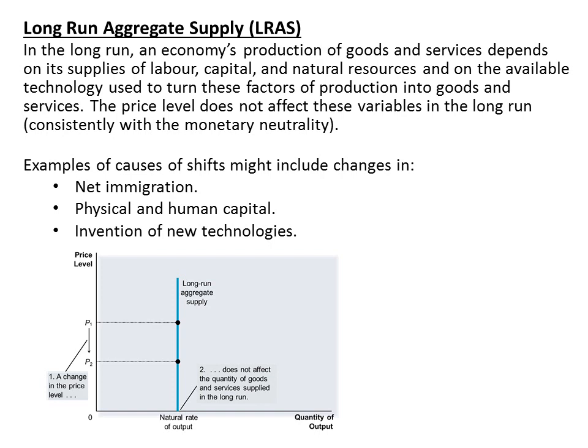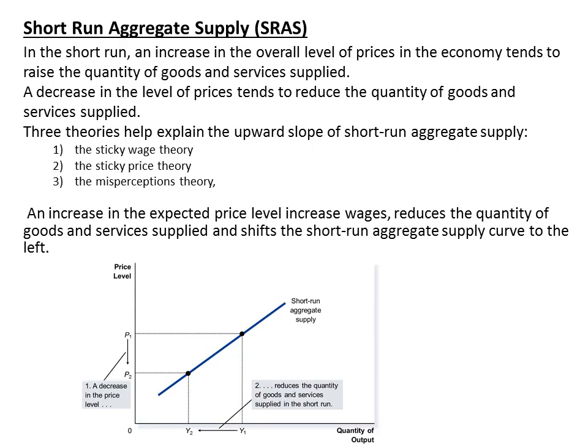Let's move now to the long-run aggregate supply. Aggregate supply is divided into long-run and short-run. The idea of the long-run aggregate supply is that monetary values cannot influence real values in the long run, so the price level cannot influence the long-run aggregate supply. Various factors can shift this curve, such as net immigration, physical and human capital, and the invention of new technologies. These factors also influence the short-run aggregate supply.